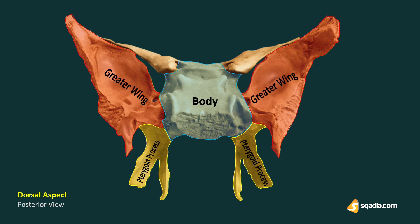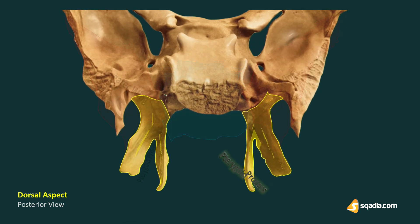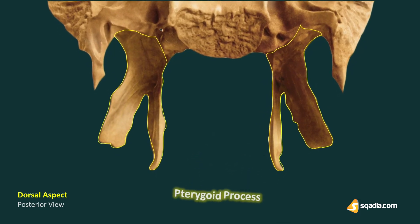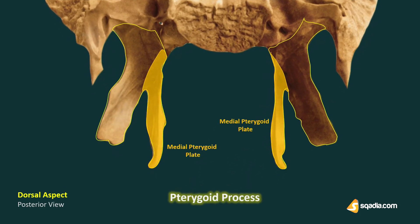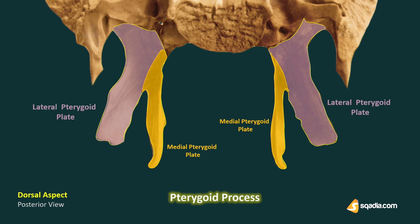Each pterygoid process divides inferiorly into the medial pterygoid plate and lateral pterygoid plate. The plates are fused together in their upper parts but are separated in their lower parts by the pterygoid fissure.